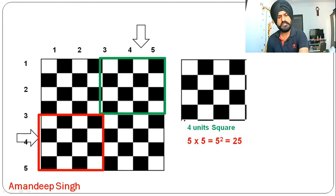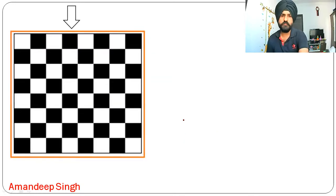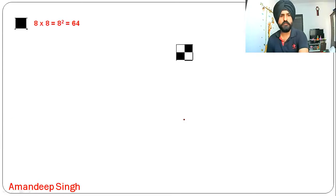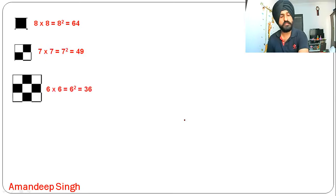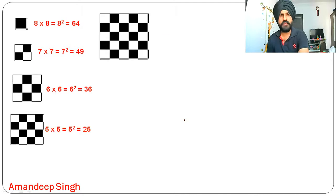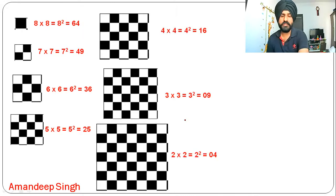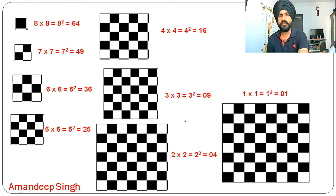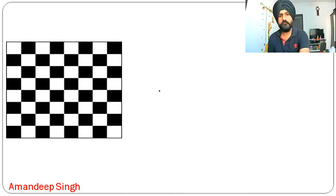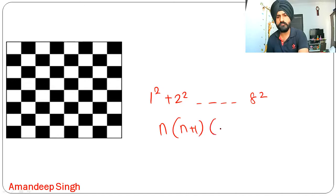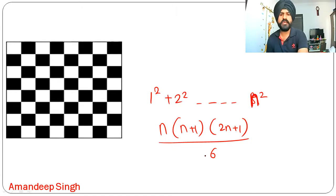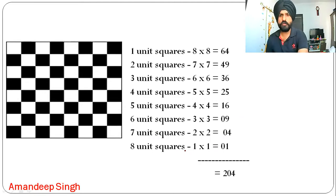So we can see the pattern: 8 squared, 7 squared, 6 squared, 5 squared — down to 1 squared for the single eight-unit square that fills the whole board. We simply need to add the squares of natural numbers from 1 to 8. The formula for the sum of squares of natural numbers up to n is: n(n+1)(2n+1) divided by 6. Substituting n equals 8 gives us our answer. One unit square gives 64, two unit square gives 49, and so on.